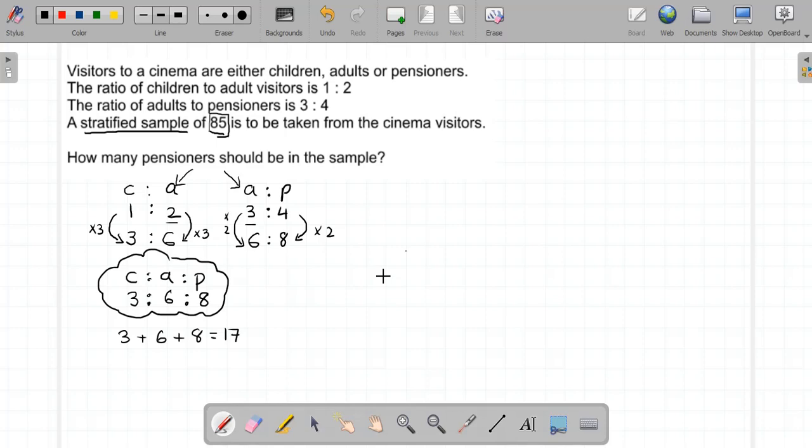So what proportion of the population is children? You've got 3 parts out of 17. Then adults are 6 parts out of 17, and pensioners are 8 parts out of 17.